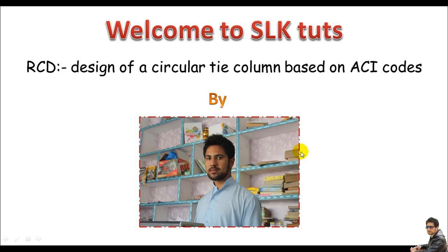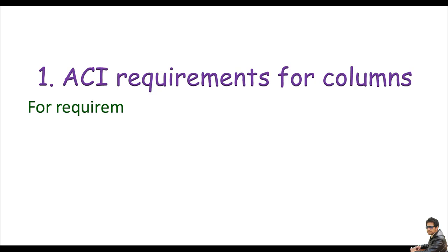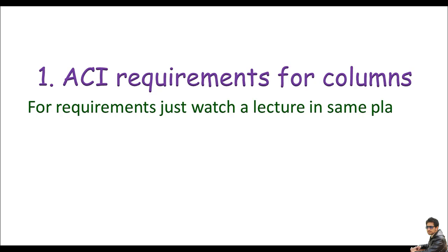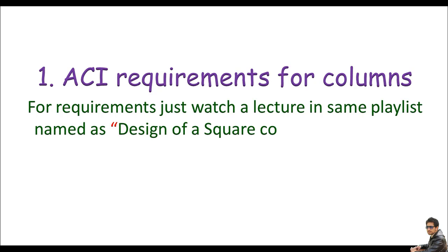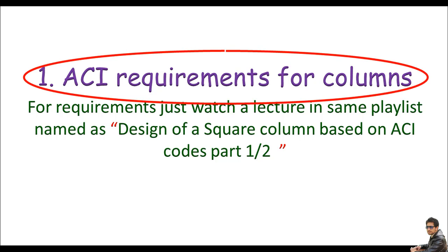Before starting the design calculation, you must know about ACI requirements for column design. To know better about ACI requirements, you can just watch the lecture in the same playlist: 'Design of a Square Tie Column Based on ACI Codes,' Part 1 of 2. I have already explained these ACI requirements for columns in that lecture, so we won't waste our time here. I recommend you watch that lecture first, then I'll go straight into solutions.